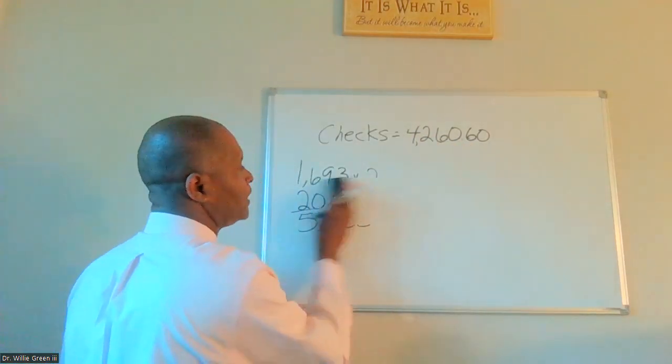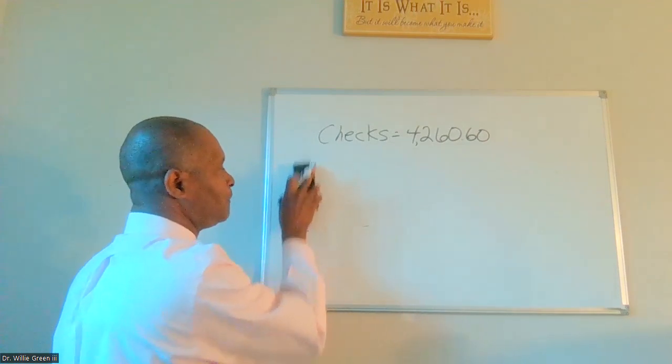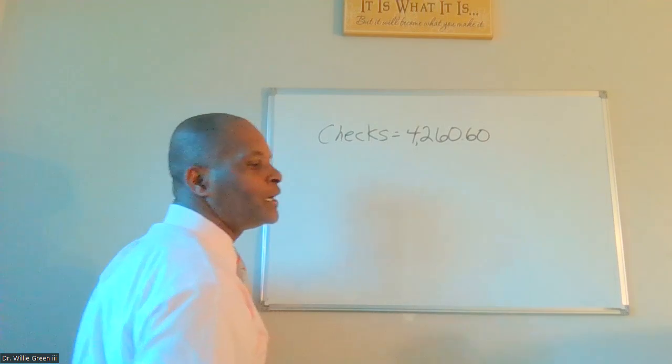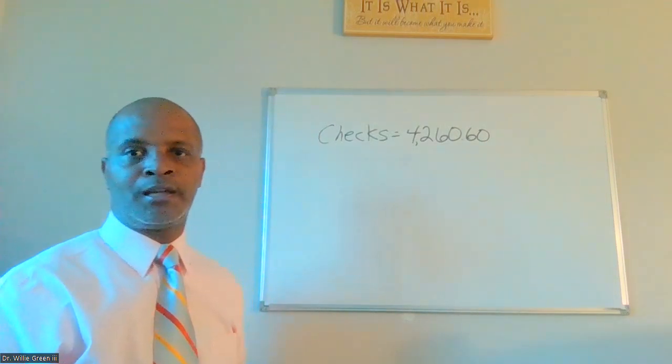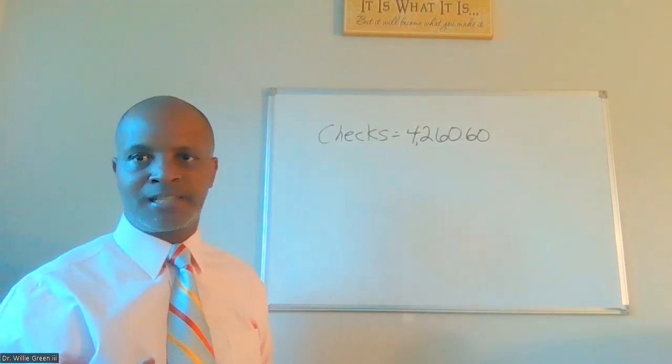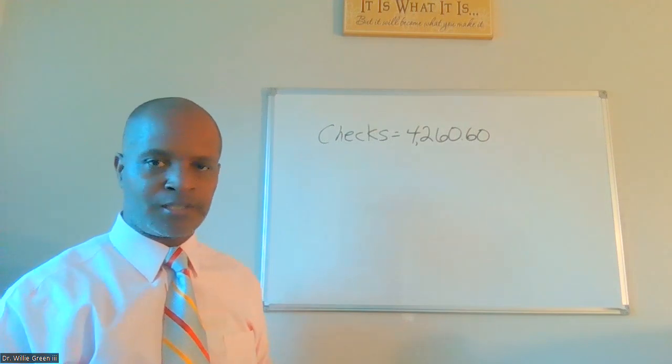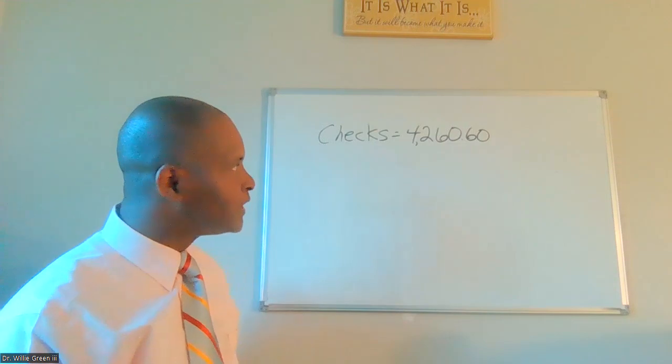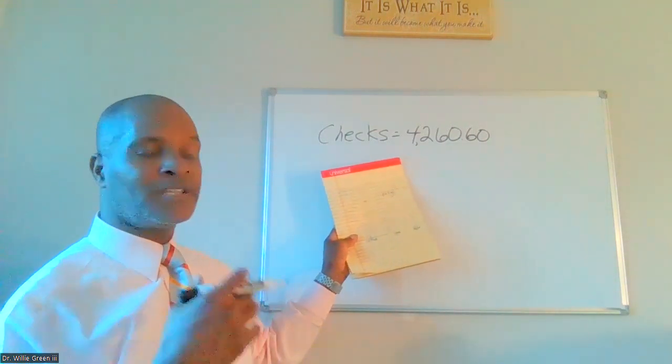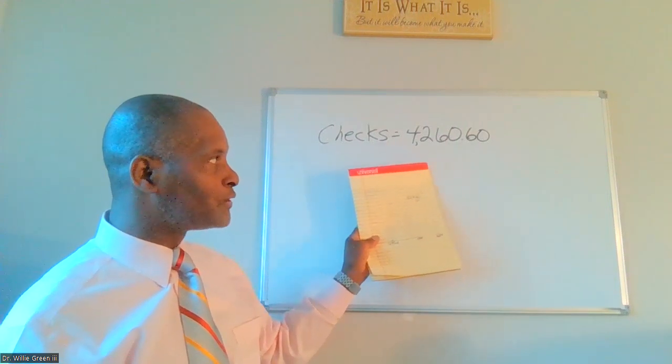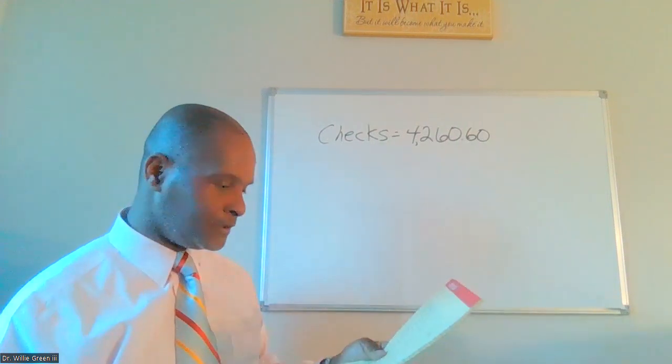So every two weeks I'm throwing in my paycheck of $1,693 and also $2,000 in investment income. Now I'm able to write out of the expenses of the HELOC $4,260.60.